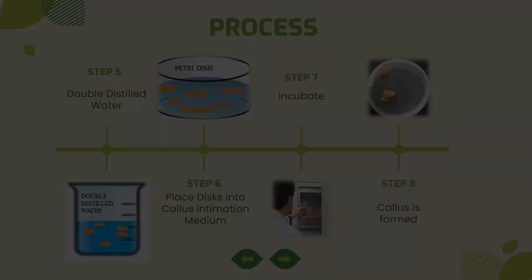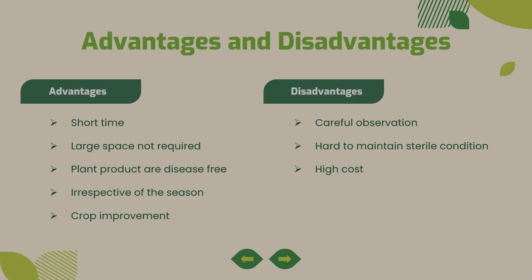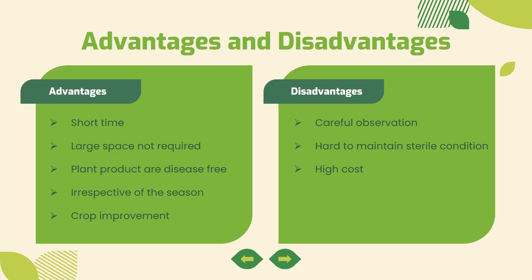Now, advantages and disadvantages. Advantages: plant tissue culture allows you to produce plants in a short time using a new place. It produces disease-free plants and allows growth regardless of season. Disadvantages: careful observation is needed; plants must be transferred to fresh culture every 2 days for proper nutrition. Maintaining sterile conditions is also required throughout the process.